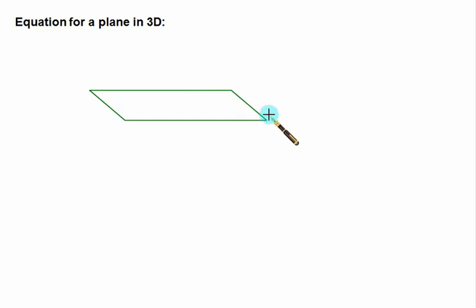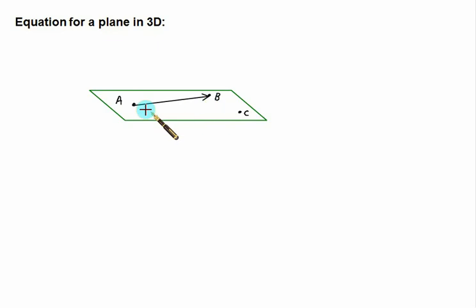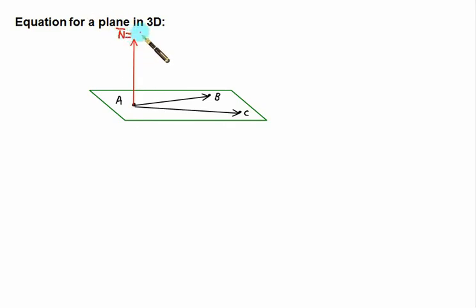To define a plane we require a minimum of three points. In this video we will develop the equation for a plane passing through three points. Consider a plane containing three points A, B, and C. We form two vectors: vector AB and vector AC. We also consider a vector n̄ which is perpendicular to the plane, obtained by taking the cross product AB × AC. The order does not matter, so the vector will point either upward or downward.